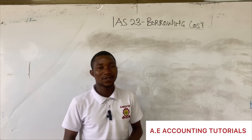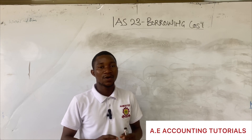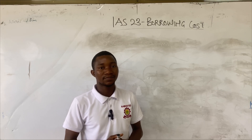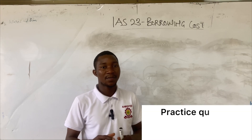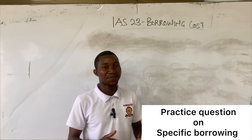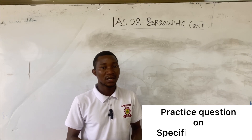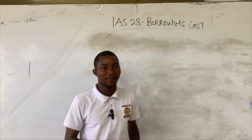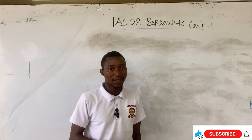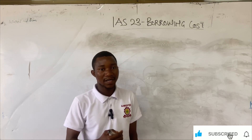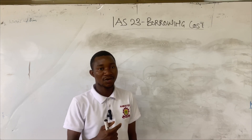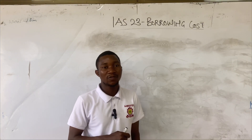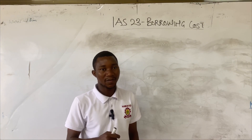Hello and welcome to AE Accounting Tutorials. We are continuing our series on IAS 23 borrowing costs. In this video, I want us to take a practice question on specific borrowing — how to calculate a borrowing cost that will be capitalized for a particular financial year. So without wasting much time, let's quickly go through the question and try to solve it together to enhance our understanding on the calculation of borrowing costs on specific borrowing.